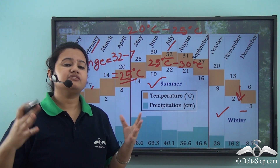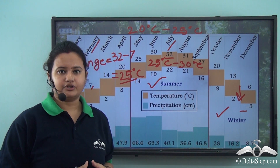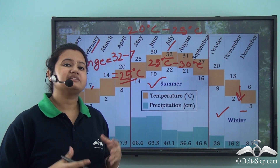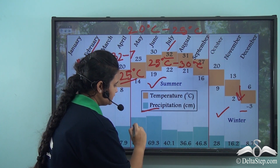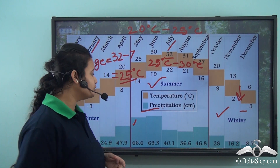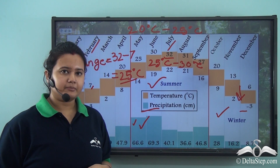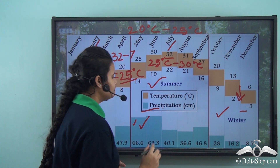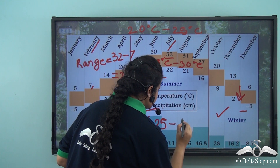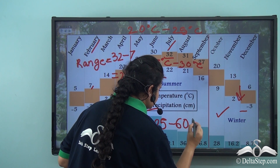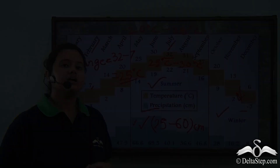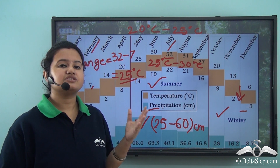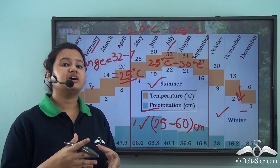Not only do temperatures vary seasonally, but there is also seasonal variation in precipitation patterns. It mostly rains during summer months, but the rate of precipitation is not very high — it usually ranges from 25 to 60 centimetres. Therefore, the average rainfall received by temperate grasslands is not very high, making this region almost an arid region.